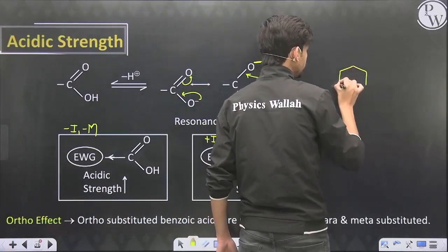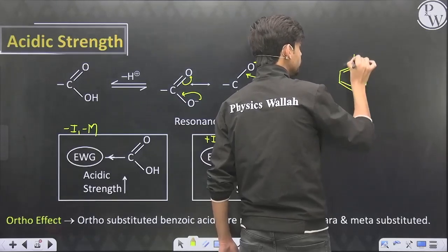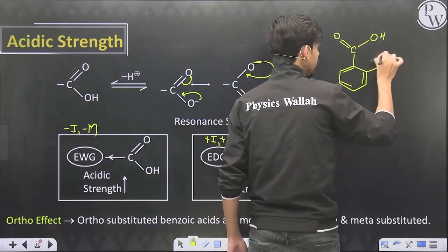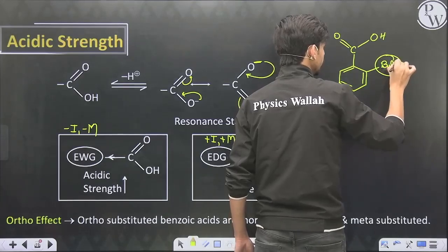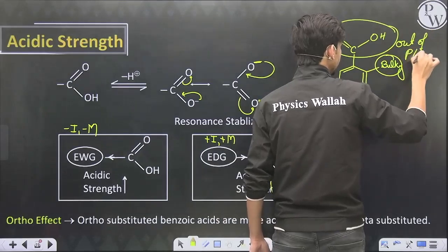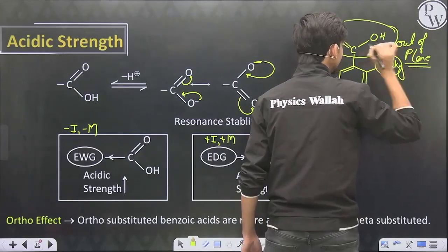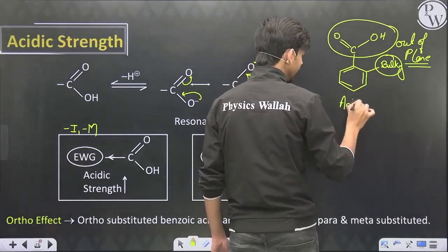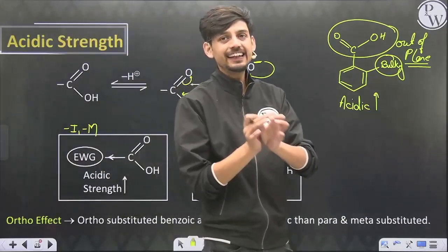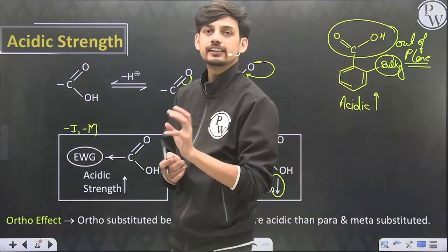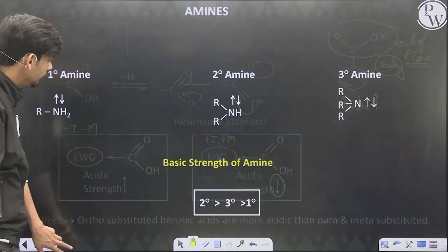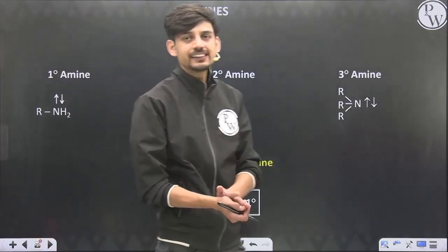One more important point: whenever we have benzoic acid, the presence of any bulky group at the ortho position sends the carboxyl group out of plane — resonance is inhibited and acidic strength is increased. This is known as the ortho effect. Any ortho-substituted benzoic acid is always more acidic than its para or meta counterpart.